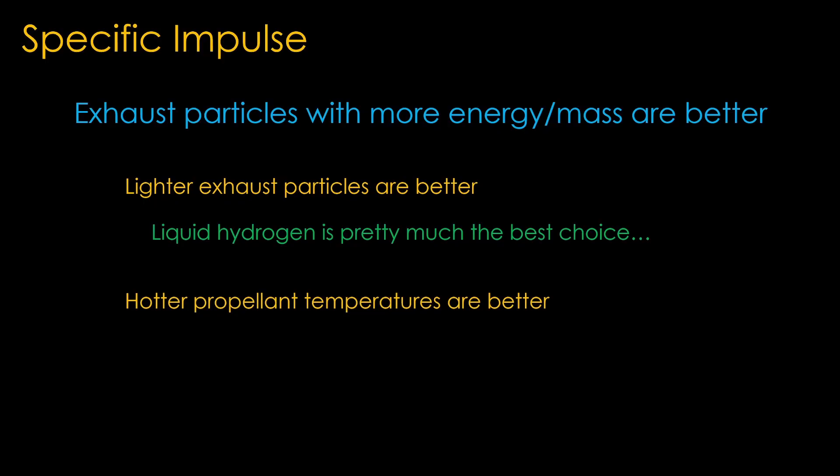The second rule is that hotter propellant temperatures are better as it means more energy per exhaust particle. Unfortunately, for reasons we'll explore in later videos, many nuclear engines use relatively low temperatures, which reduces the specific impulse they produce.